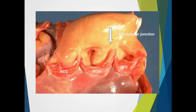Here is our sinotubular junction where the aortic root becomes the ascending aorta, and we can see these semilunar curves curl up to the ST junction level. Particularly hard to see, but there are the nodules of Arantius here, and this being the right coronary cusp, we can see that the right coronary artery does arise a little bit more superior than the left.